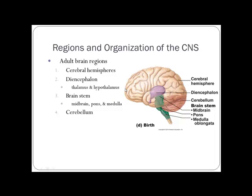With the adult brain, there are four main regions: the cerebral hemispheres, the diencephalon, the brainstem — which includes the midbrain, pons, and medulla — and then the cerebellum.